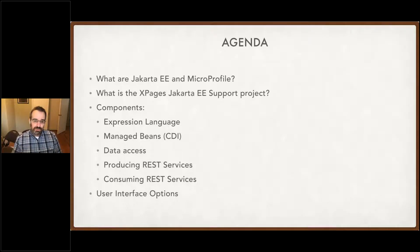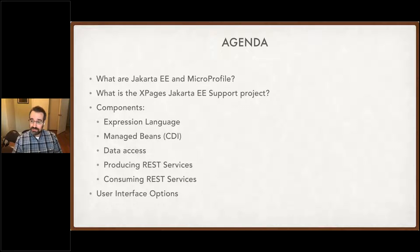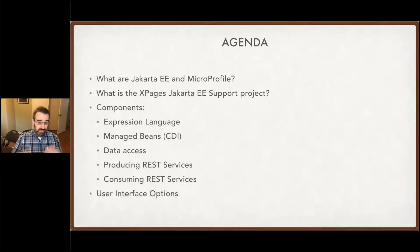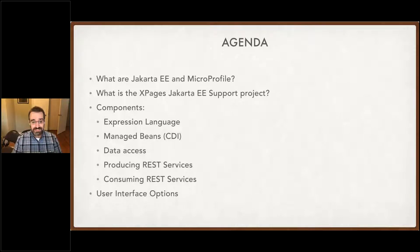The agenda: I'll give a quick overview of what Jakarta EE and MicroProfile are — they are related but distinct projects. I'll talk about this project specifically and how it relates to those specs, then go through some of the key components. The idea is to cover the things that, if you add this to an existing project or start a new one, you'll probably start with. I also want to focus on the specific problems that Domino developers face and how this project can improve things. XPages is still an option, but there are other UI options beyond that.